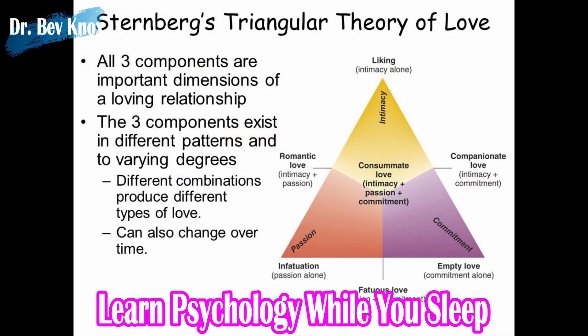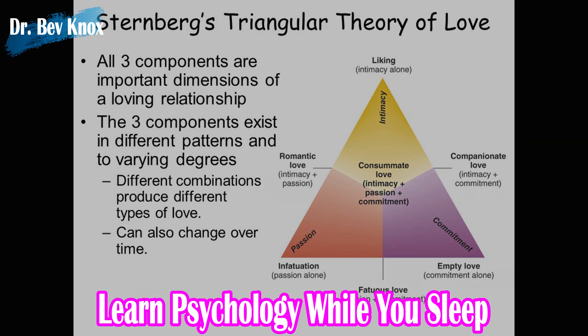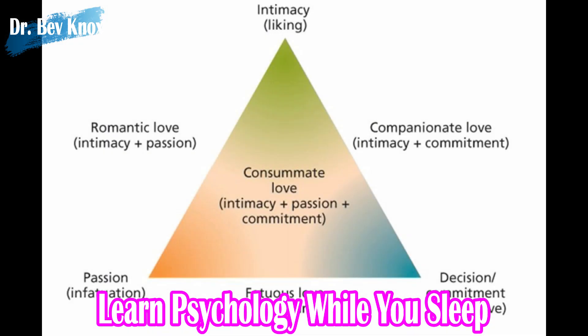Sternberg calls his theory a triangular theory of love and uses an actual triangle to represent his theory. The top point of the triangle is intimacy. The left point is passion and the right point is decision or commitment. This triangle metaphor allows us to show how two people in a relationship can be well-matched or mismatched in the love they feel towards each other.